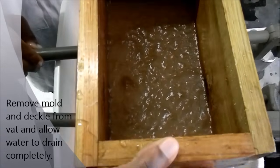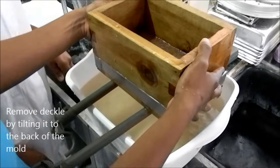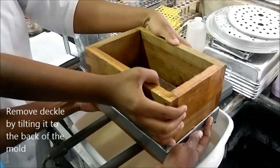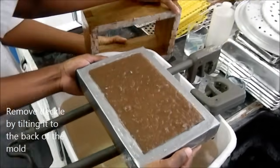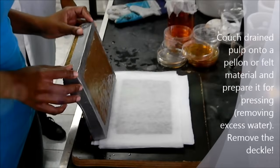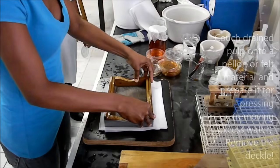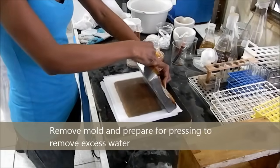The next step is to remove the mold and take the deckle. And you're going to transfer or couch the sheet onto a pellon or felt. And you can stack several sheets like this.